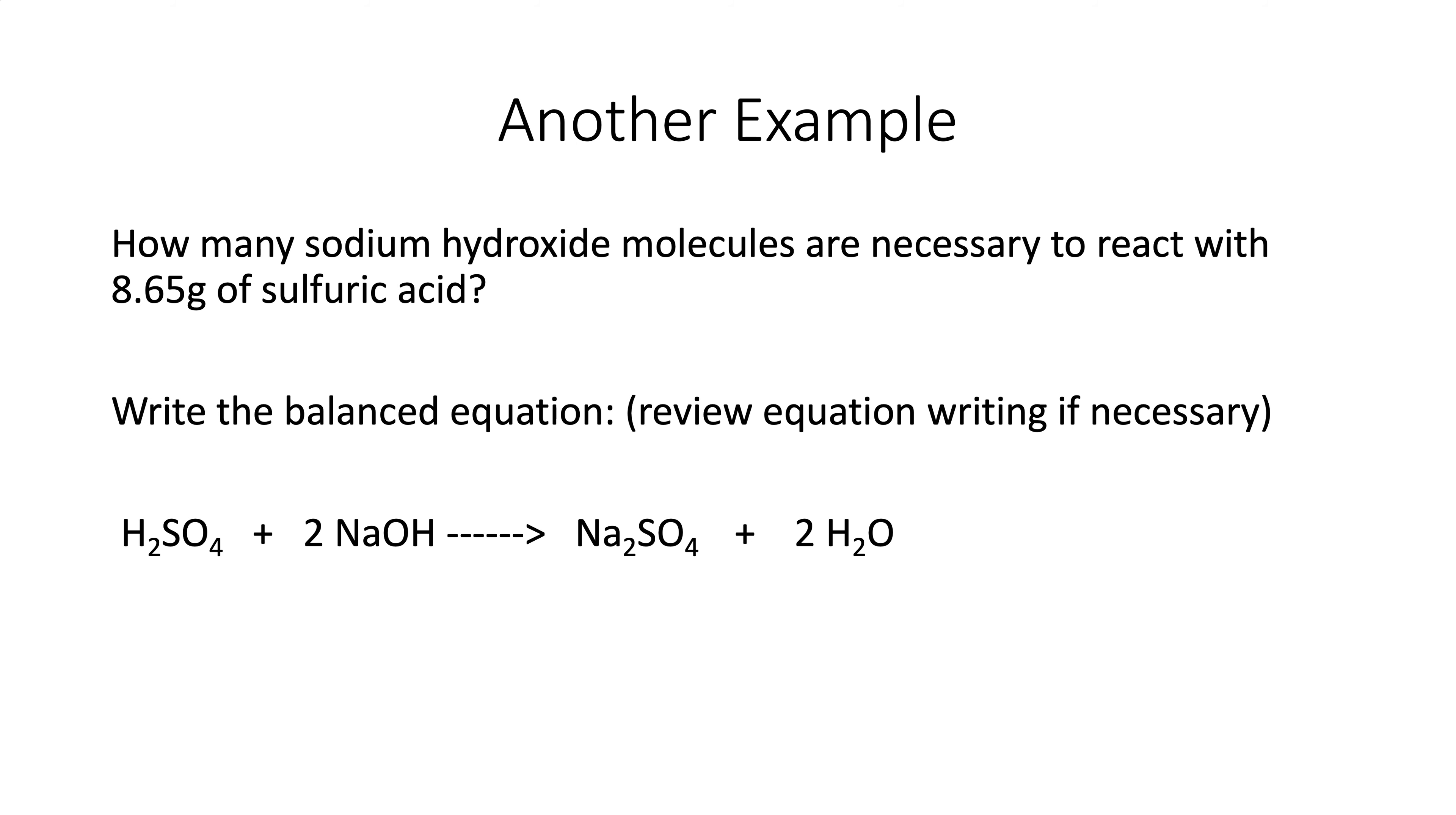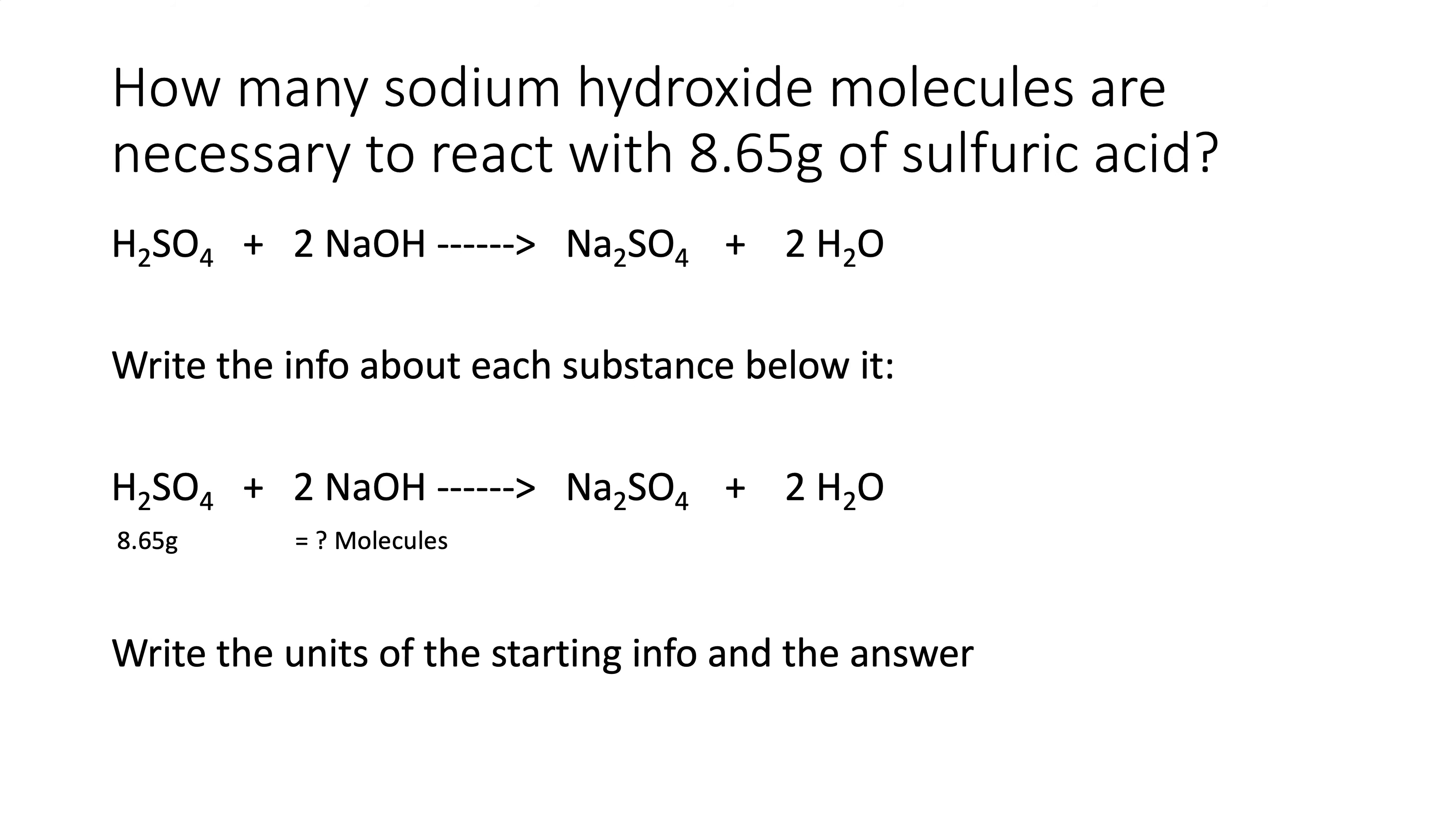First thing we need to do is write the balanced chemical equation. And that's something you may need to review because it's still kind of new to you. Now we'll go ahead and go through the math. First of all, write the info from each substance near that substance. I write it below. So we have 8.65 grams of sulfuric acid. We want to find molecules.